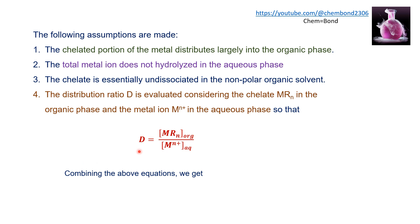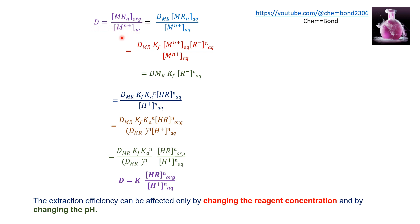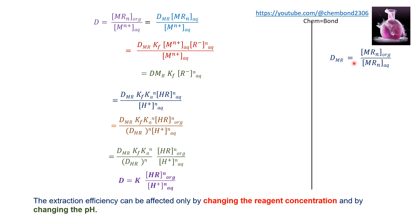Combining previous equations, the distribution ratio equals the chelate in the organic phase divided by the metal ion in the aqueous phase. Using the chelate distribution ratio, the chelate in the organic phase equals D_chelate multiplied by chelate in the aqueous phase. Substituting the formation constant KF, the chelate in the aqueous phase equals KF multiplied by [M⁺] multiplied by [R⁻]ᴺ.